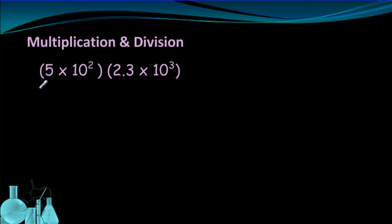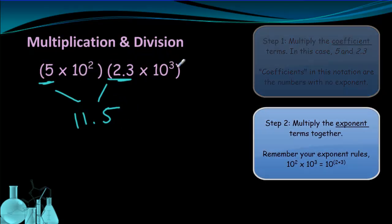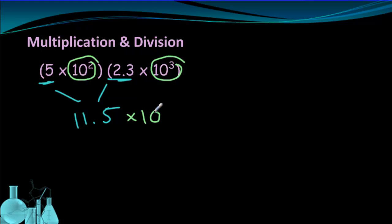Our first example is multiplying two numbers that are written in scientific notation. The first thing we want to do here is multiply the numbers together. So we have 5 and 2.3 are going to give us 11.5. The next thing we want to do is combine the exponent terms. So we take the 10 to the second and the 10 to the third, and the way to combine them is by adding their exponents together. So this is going to end up with times 10. We're multiplying the numbers together, so we add the exponents, 10 to the fifth power.